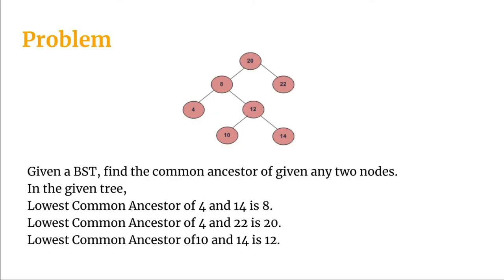This is a diagram of a binary search tree. In a binary search tree, all the nodes that appear to the left of the root have lesser values than the root, and all the nodes that appear to the right have greater values than the root node.